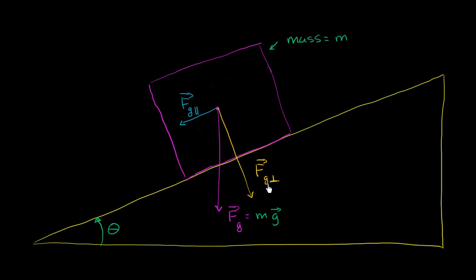So this is the component of force due to gravity that's perpendicular, and this is the component that is parallel. Let's use a little geometry and trigonometry, given that this wedge is at a theta-degree incline relative to the horizontal. If you measure this angle right over here, you get theta. In future videos we'll make it more concrete — like 30 or 45 degrees. But let's keep it general and figure out what these components of the gravitational force are going to be.